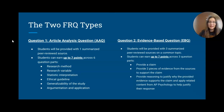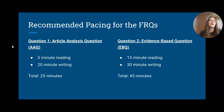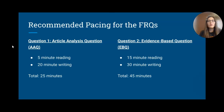Both are weighted the same — seven points each — but they won't take the same amount of time. Recommended pacing is about 25 minutes on the AAQ and 45 minutes on the EBQ. This difference comes down to reading time: the AAQ has one article, so about five minutes of reading, while the EBQ has three articles, estimating about 15 minutes of reading. You can flex the time as needed on the actual test.